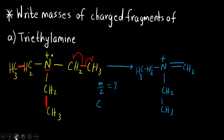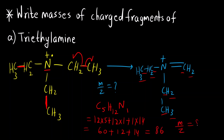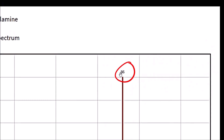For the m/z of the triethylamine charged fragment: C₅H₁₂N. So: (5×12) + (12×1) + (1×14) = 60 + 12 + 14 = 86. At m/z = 86, we should get the base peak. Looking at the mass spectrum of triethylamine, the base peak is at 86, confirming the answer.